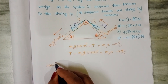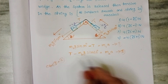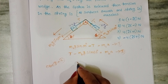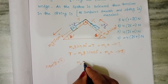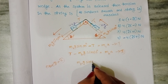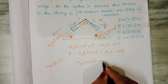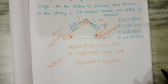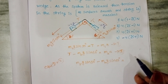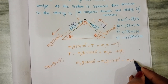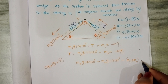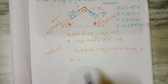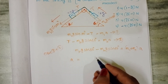Now simplify by adding equation 1 and equation 2. The minus T and plus T cancel each other. This gives M1·G·sin 30° minus M2·G·sin 60° equals M1·A plus M2·A. Taking A common on the right side gives M1 plus M2 into A.